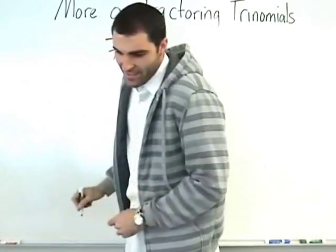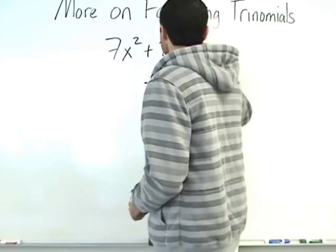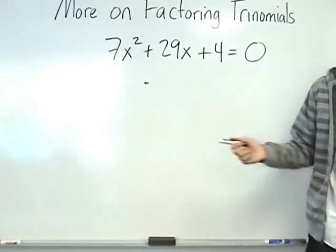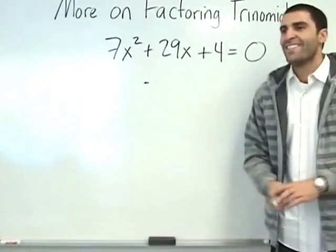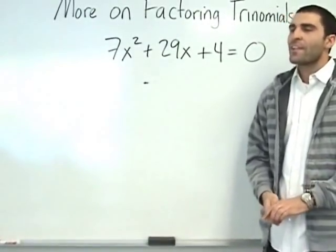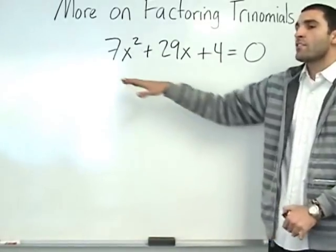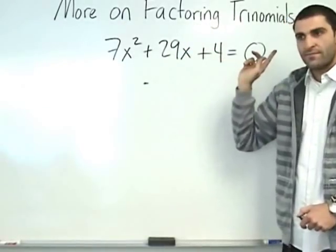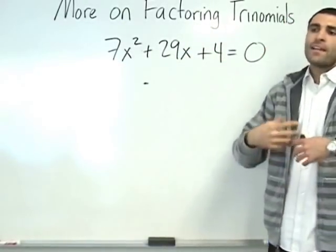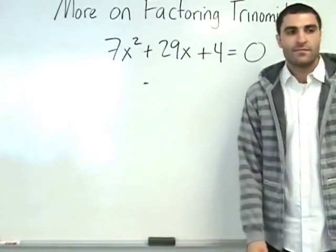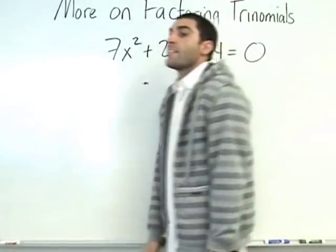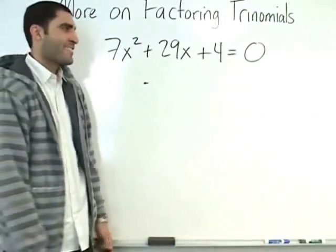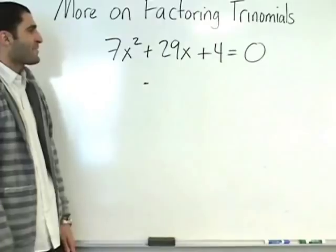7x squared plus 29x plus 4 equals 0. Question already — love it. Go. What is a trinomial? Good. A trinomial is a polynomial — which is an equation — with three terms: one, two, three. A polynomial is a many-termed equation. So a trinomial is a type of polynomial. Excellent. And we just heard someone say they're taking notes — that's fantastic.